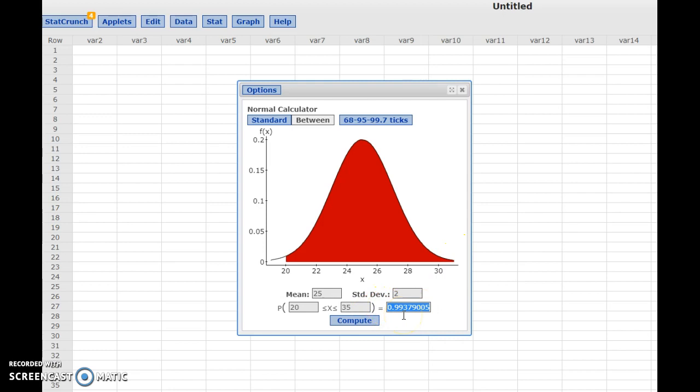Likewise, I can enter an area here. We'll say 0.8 and hit enter. And the program will give me the two data values on the graph that border the middle 80%.